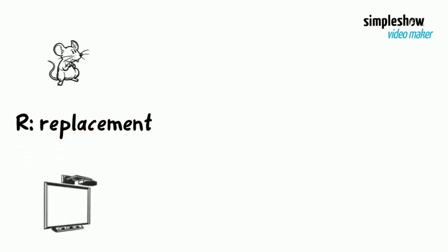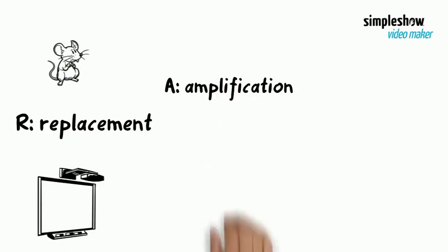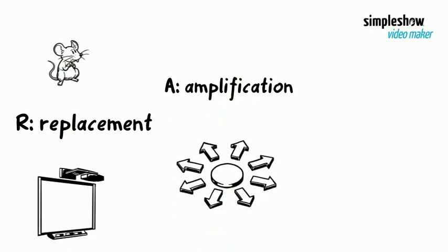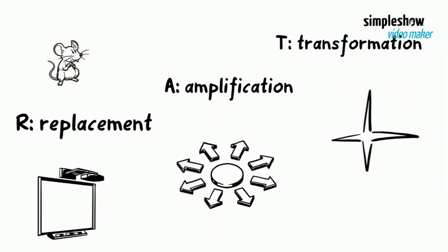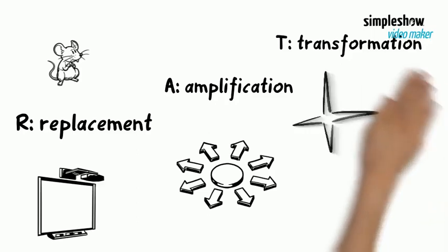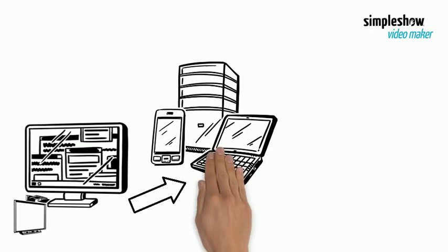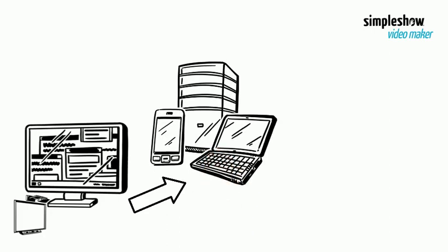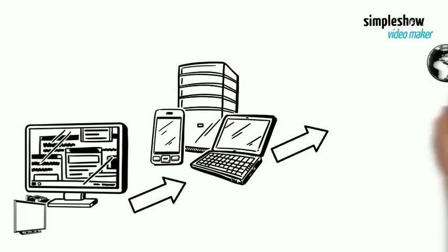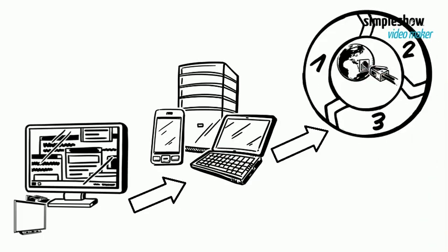The RAT describes trainers' use of technology. It comes from replacement of analog media, over amplification of the range of media, and finally to transformation of totally new results. Firstly, trainers replace an existing pedagogical practice into a newer medium. Then trainers amplify their practice and use technology to improve learning practices or outcomes. And finally, trainers use technology which cannot be substituted for the process.